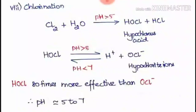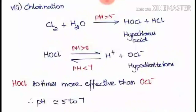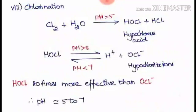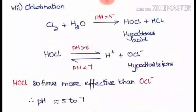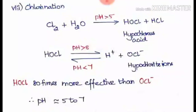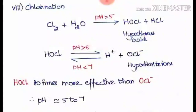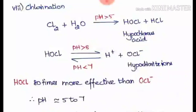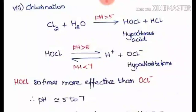The next is chlorination, the common basic method adopted all over the world. When chlorine reacts with water it gives HOCl, that is hypochlorous acid. This happens when the pH is above 5. This hypochlorous acid further dissociates into H⁺ and the hypochlorite ion. Both hypochlorous acid and hypochlorite ion are called free chlorine. HOCl is nearly 80% more effective than the hypochlorite ion.